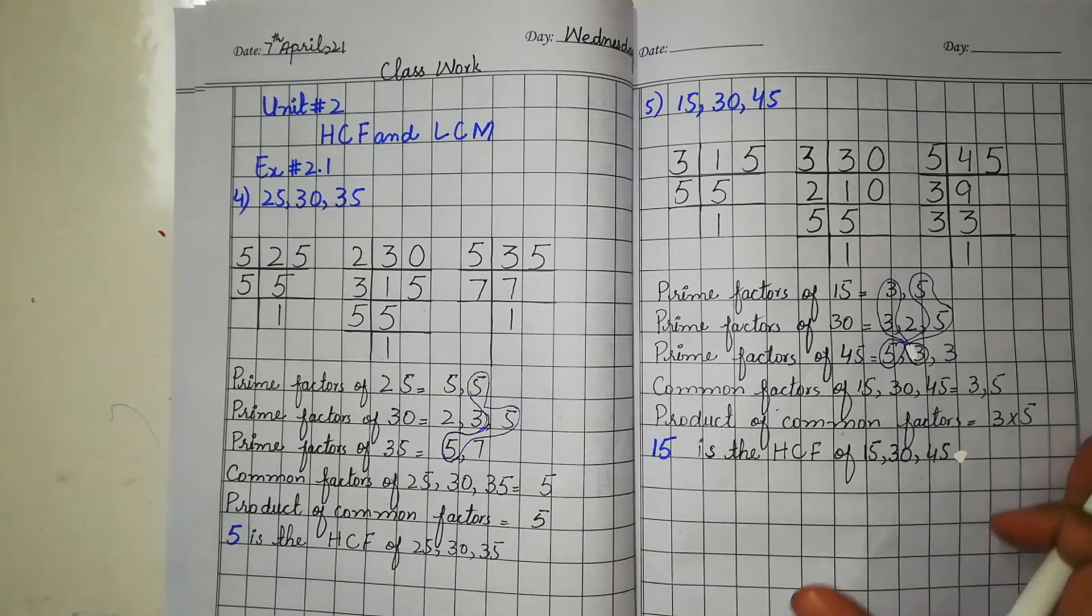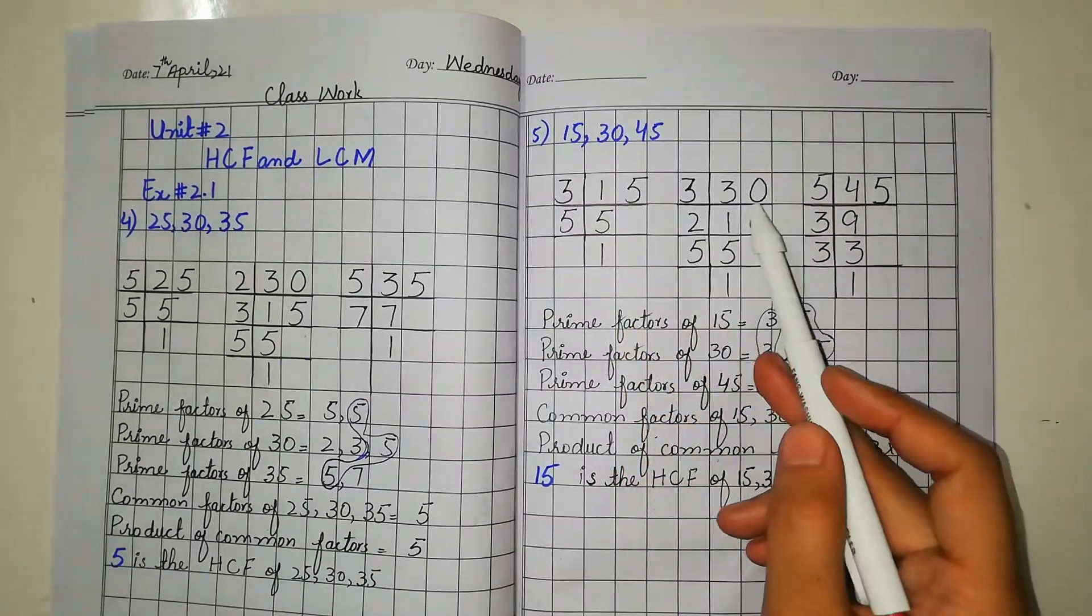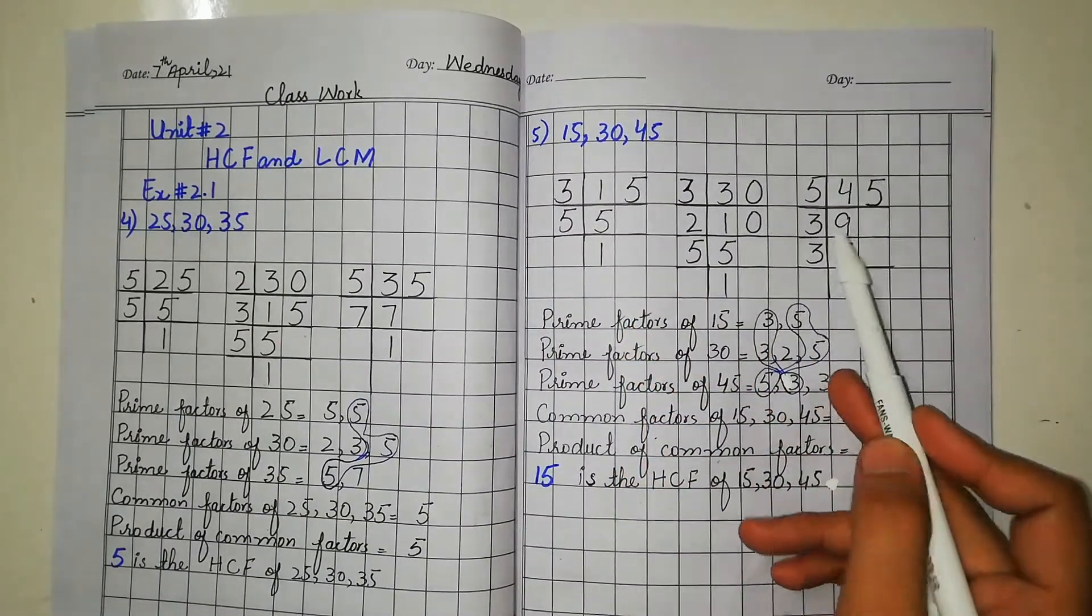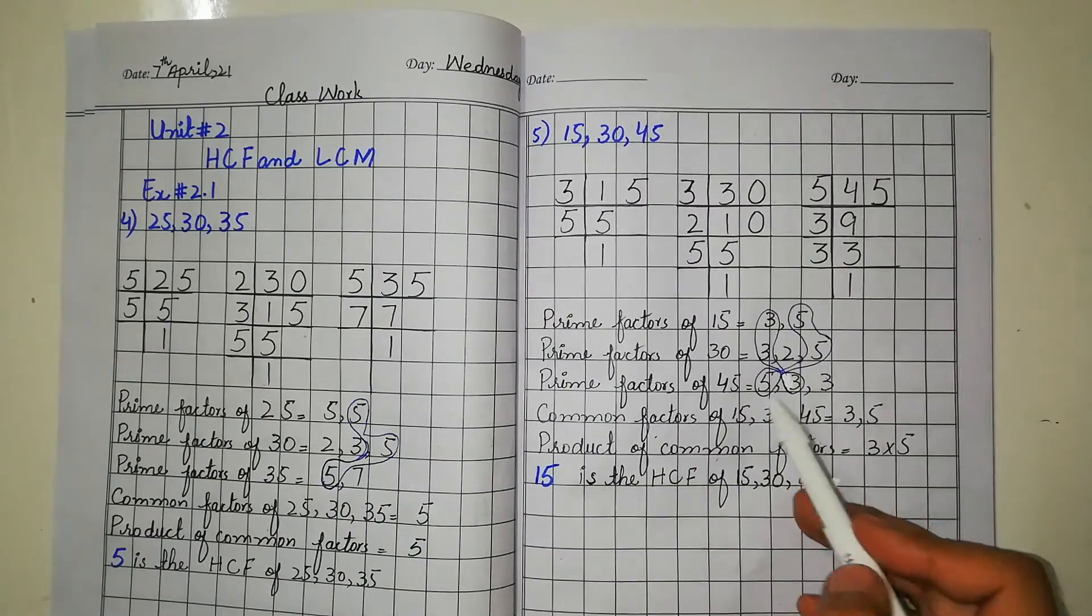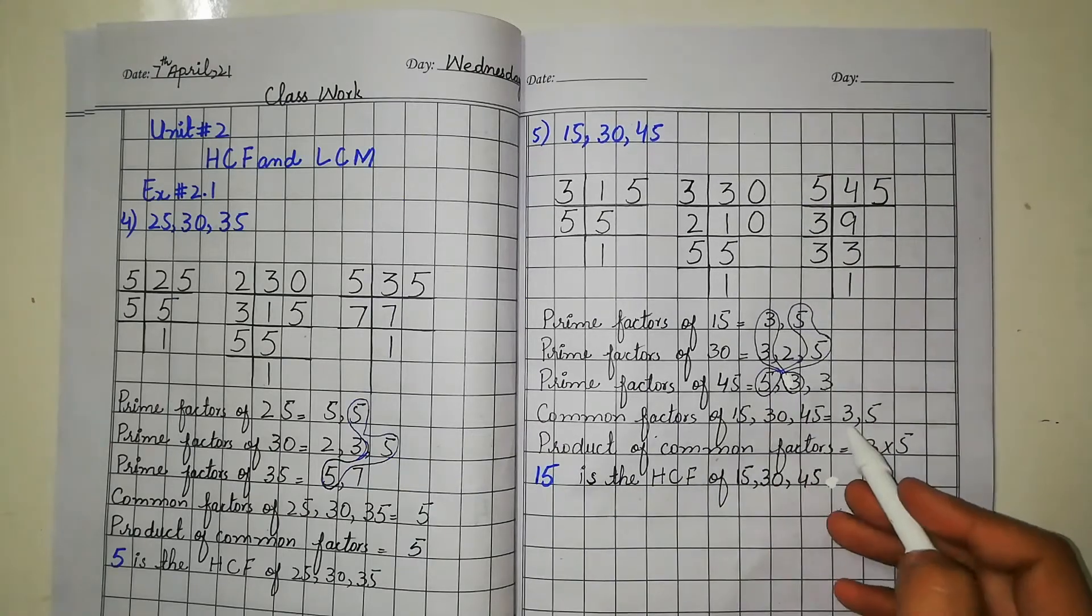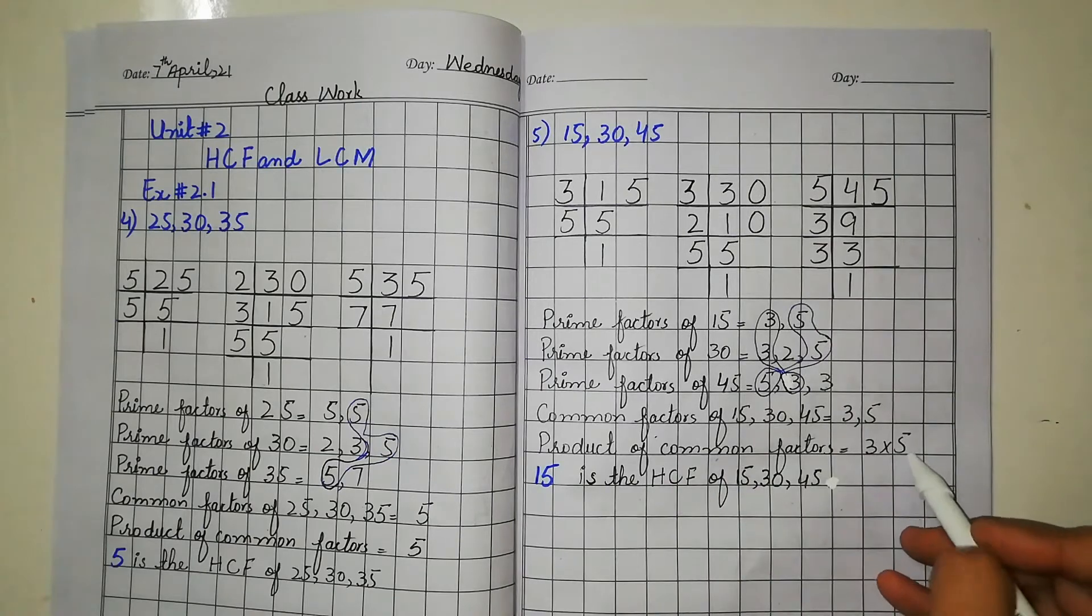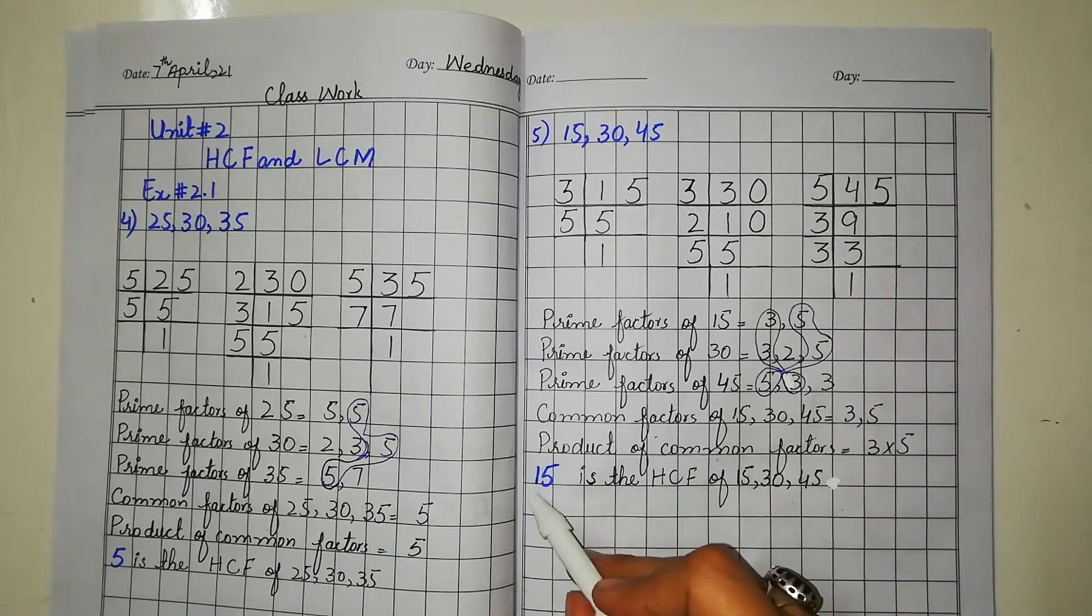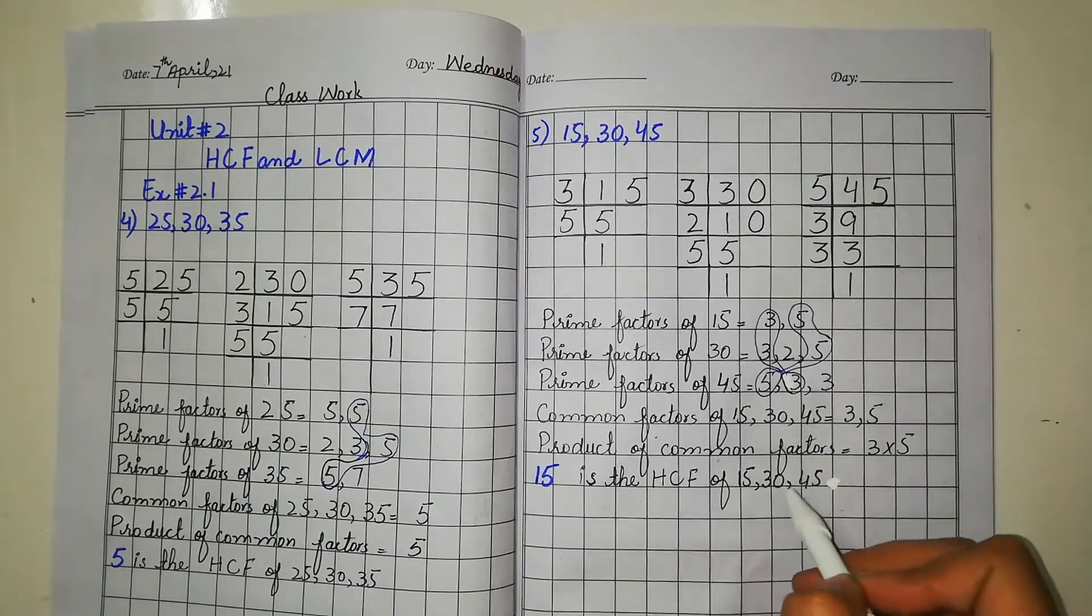Next, question number 5. You will find the same: we have 15, 30, and 45. Find out the prime factors, and after writing them we will mark the common factors here. The common factors are 3 and 5. Now we will multiply the product of common factors. Both of these questions include 30 and 45.